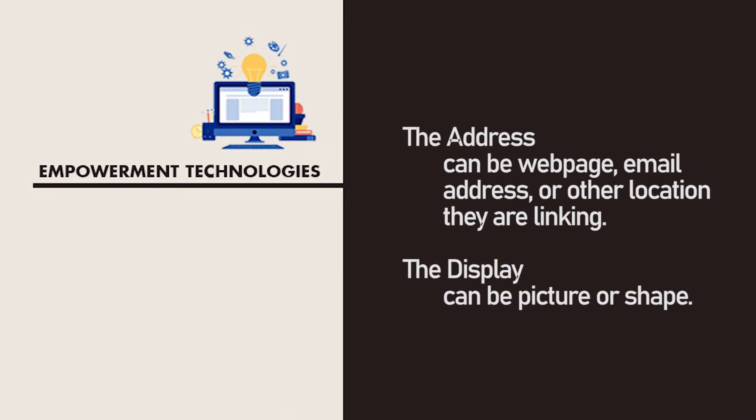Hyperlinks have two basic parts: the address, which can be a webpage, email address, or other location they are linking to; and the display, which can be a picture or shape.